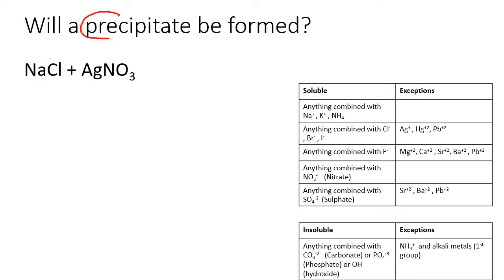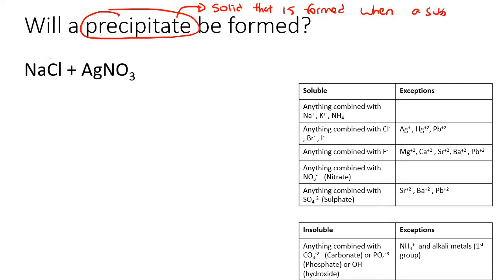Remember what a precipitate is? A precipitate is a solid that is formed when a substance cannot be dissolved — like when an ionic substance sticks together but the force holding the ions is so strong that the water molecules cannot pull it apart. Then we produce a precipitate.